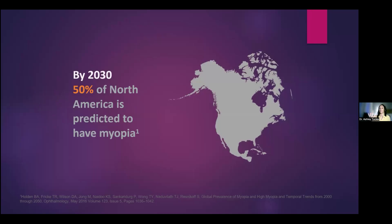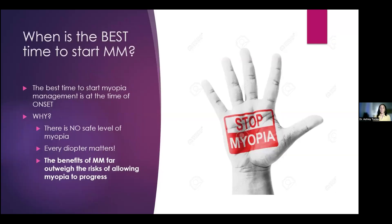If we think about myopia not as refractive error but as axial elongation, you start to understand why it may be problematic to just wait and see what happens. Every single diopter matters. The myopia profile organization and the CLEAR study group agreed that myopia management should be initiated when myopia is apparent, regardless of prior progression, rather than waiting to assess the progression rate. There's limited value in using past change to predict future progression — a patient who didn't progress last year doesn't necessarily mean they won't progress the following year.